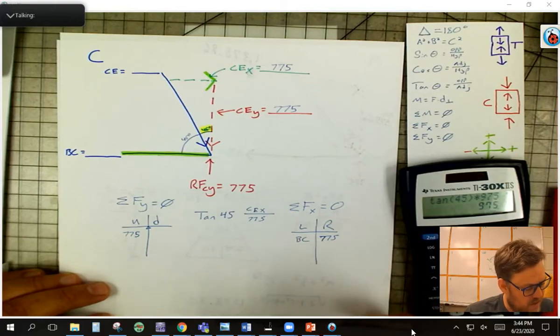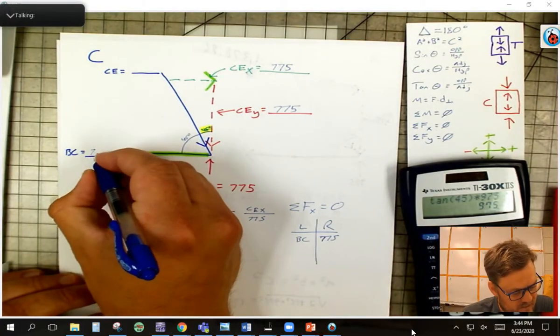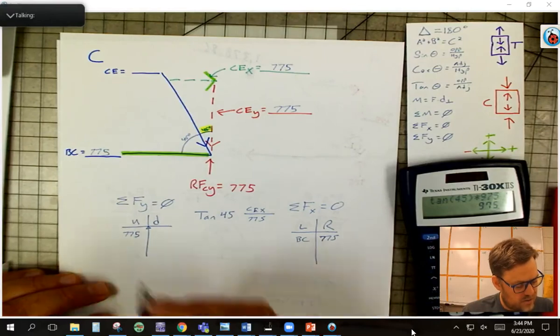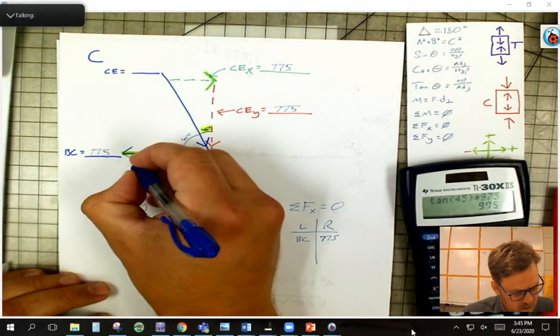So it's got to be going left, and it's got to be going at the same magnitude. So I know it's going left, so I want to make sure I put my arrow there.